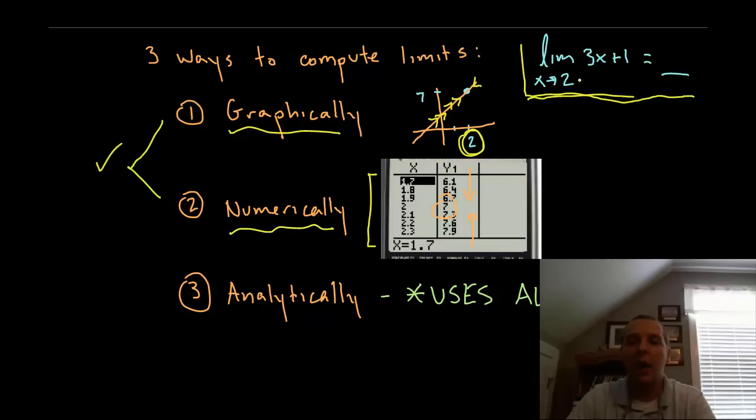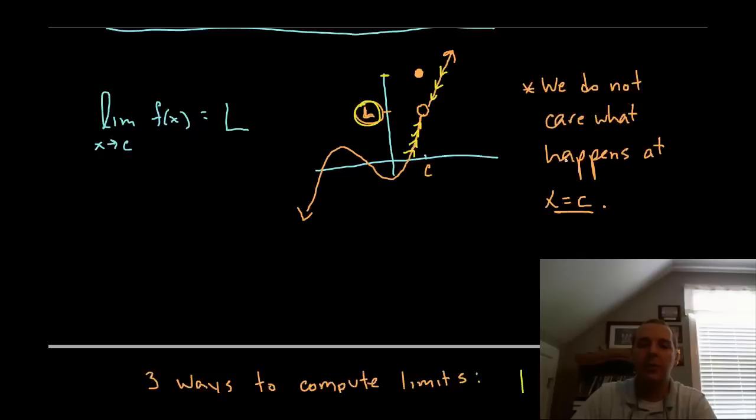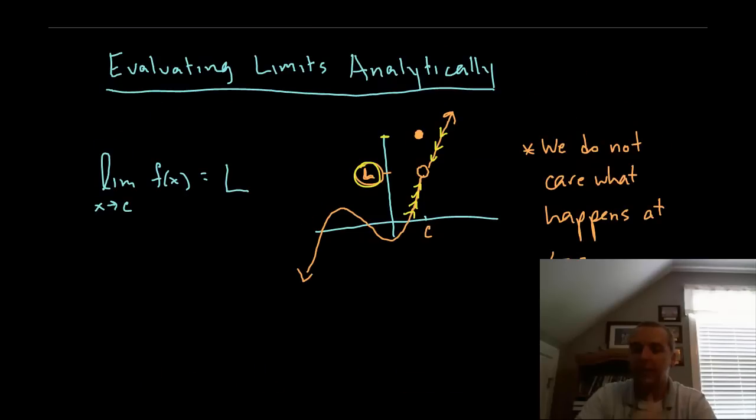You might look at a limit and say why didn't you just plug in 2 and see that you get 7 and call that the limit. Well again we have to remember we don't care what happens exactly at 2.